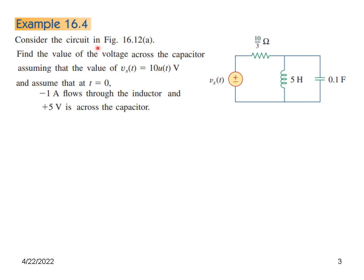Consider the circuit in the figure. Find the value of the voltage across the capacitor, assuming that the value of v_s(t), the supply voltage, is 10u(t) V. And assume that at t = 0, the initial condition - the current flowing through the inductor is -1 A, so I_0 = -1. And the capacitor voltage at t = 0, V_0, is +5 volts.